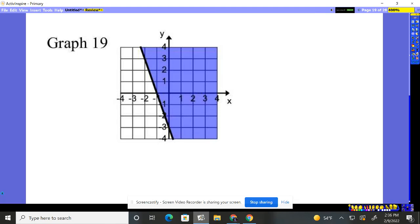Graph 19. What is graphed here? Well, we shaded the side. So that means it has to be an inequality.